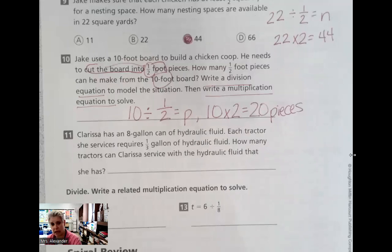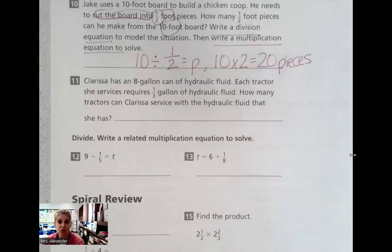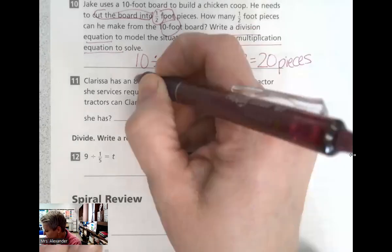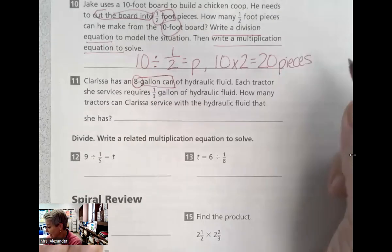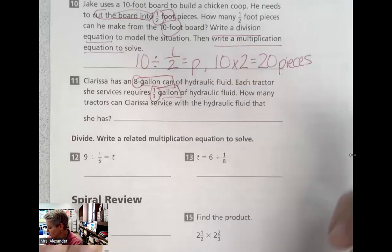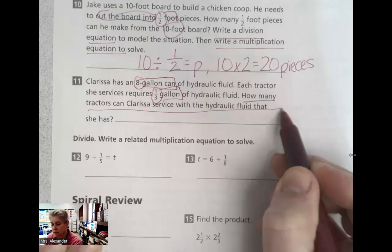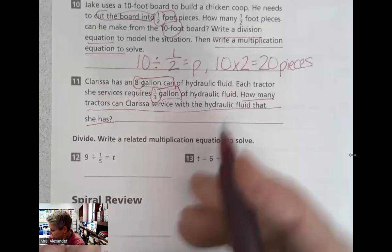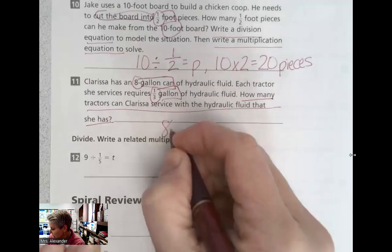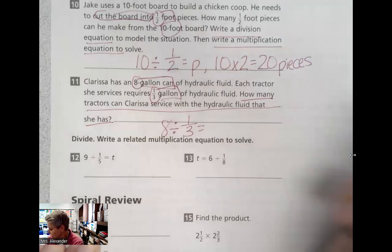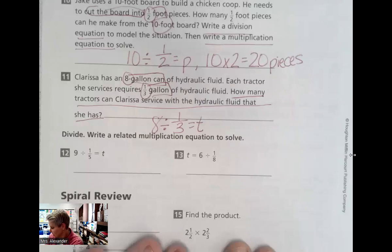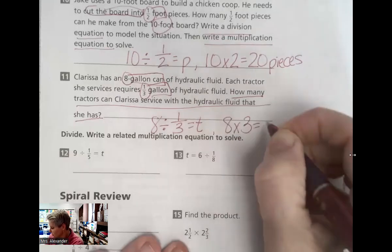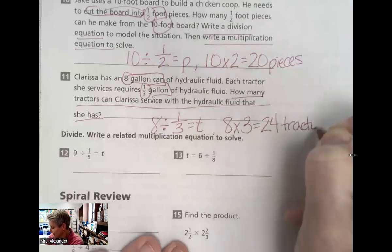All right, one more story. Clarissa has an eight-gallon can of hydraulic fluid. Each tractor she services requires a third of a gallon of hydraulic fluid. How many tractors can Clarissa service with the hydraulic fluid that she has? She has an eight-gallon can, and she has to use a third of a gallon for each of those tractors. How many tractors can she service? So those eight gallons, I'm going to go below because my lines are crazy. Eight gallons divided by one-third is going to equal the number of tractors that she can service. So keep, change, flip. She can work on 24 tractors with that one eight-gallon can.